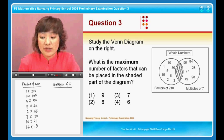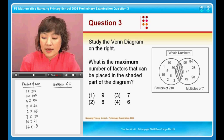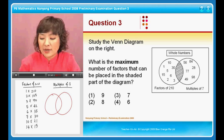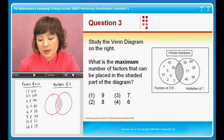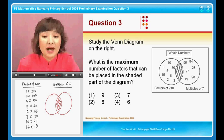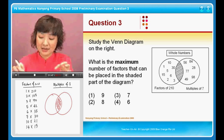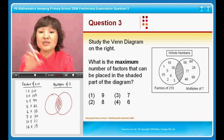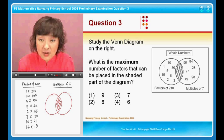Now, if you understand Venn diagram, if you look at the Venn diagram there, there's a part that's grey. This grey part refers to numbers that appear in the factors of 210 as well as multiples of 7.